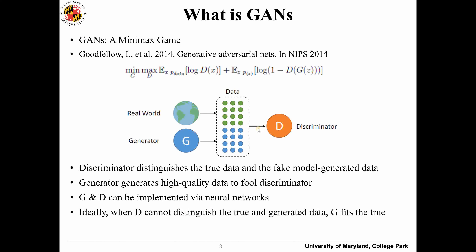The discriminator again performs inspection and gives the result to the generator. If the data is good, it will pass. If the synthetic data is still very far from real data, the generator keeps generating more data. It's a kind of looping system — that's roughly what GAN is.